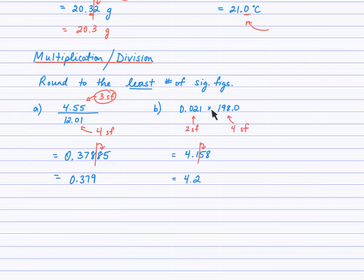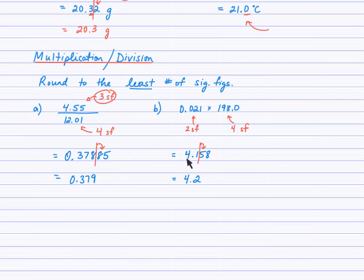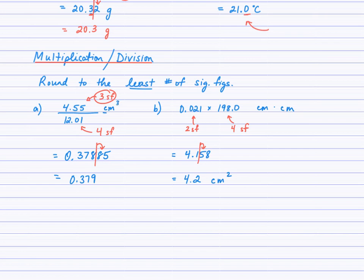For part B, we're multiplying, so we follow this rule and round to the least number of sig figs. There are two sig figs in the first measurement and four in the second, so I round to two sig figs. When I compute on my calculator, the answer is 4.158. Counting sig figs from left to right: one, two — look at the neighbor, it's high, so I bump the 1 to a 2. We finish with 4.2. If each measurement had been in centimeters, we'd have centimeters squared. For centimeters cubed divided by centimeters, subtracting exponents gives centimeters squared.